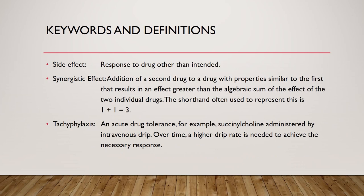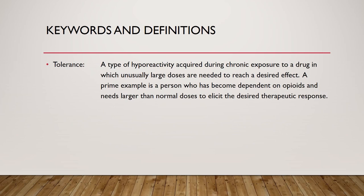Side effect: response to drug other than intended. Synergistic effect: addition of a second drug to a drug with properties similar to the first that results in an effect greater than the algebraic sum of the effects of the two individual drugs; shorthand is 1 plus 1 equals 3. Tachyphylaxis: an acute drug tolerance — for example, succinylcholine administered by intravenous drip; over time, a higher drip rate is needed to achieve the necessary response. Tolerance: a type of hyporeactivity acquired during chronic exposure to a drug in which unusually large doses are needed to reach a desired effect. A prime example is a person dependent on opioids who needs larger than normal doses to elicit the desired therapeutic response.